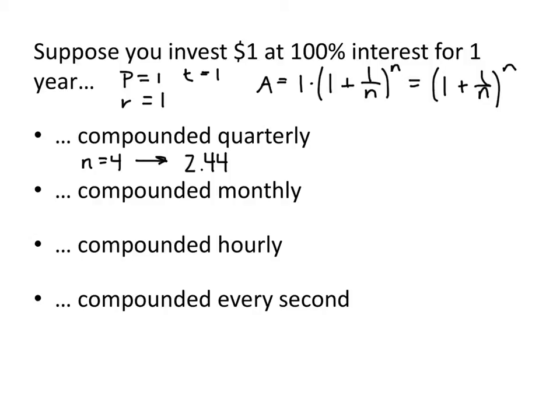Now if we compound monthly, now n is increased to 12, because there's 12 months in a year. And the general idea of compound interest is the more often you compound, the more money you get.